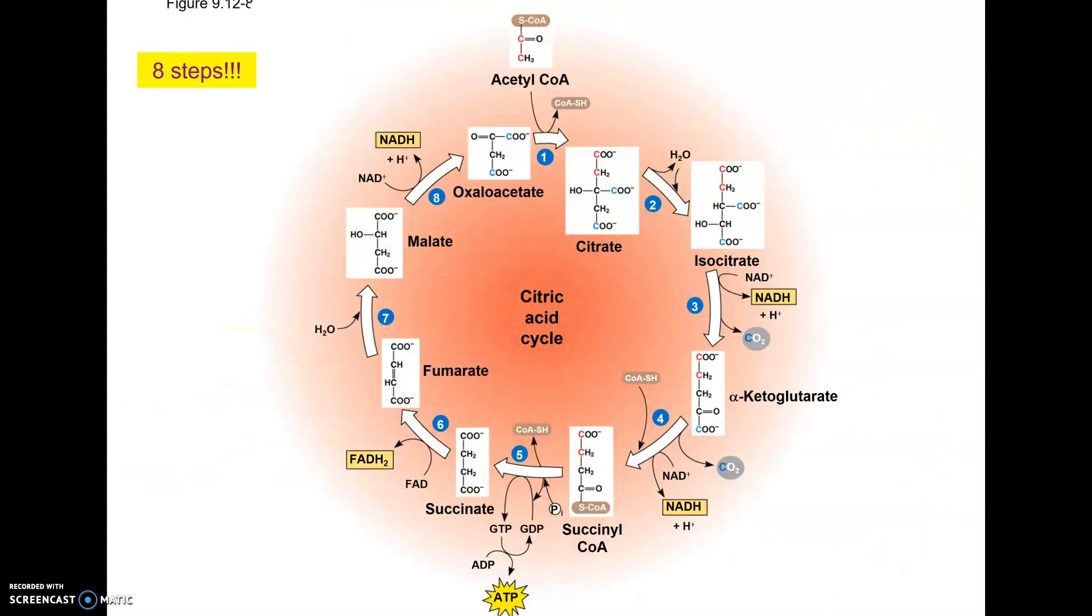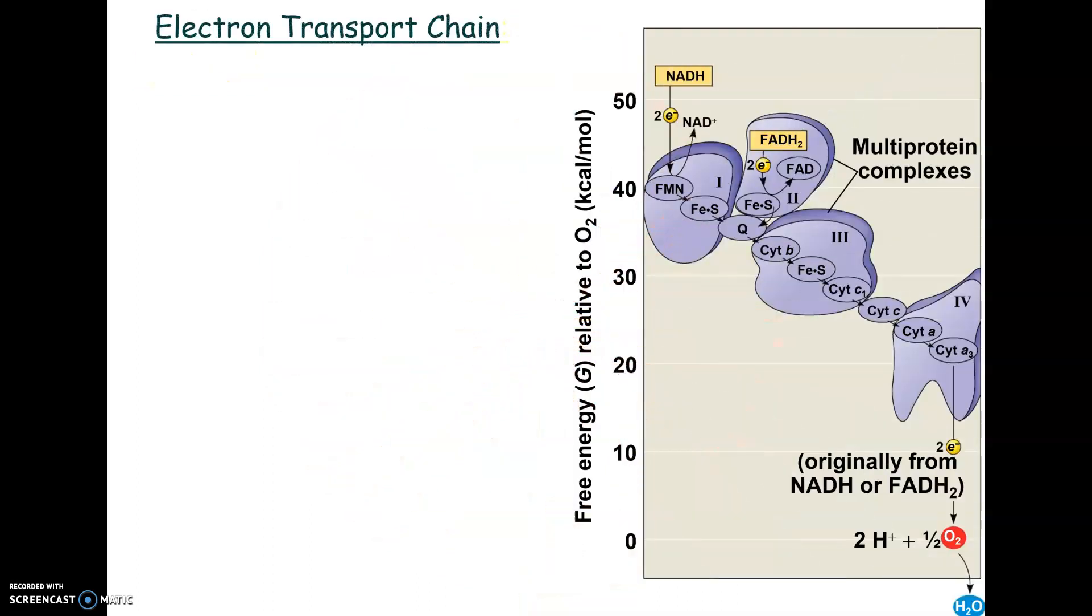So this is a picture of what the Krebs cycle really looks like. The reason it's sometimes called the citric acid cycle is because this very first thing that's made is citrate or citric acid, and so that's where the name comes from. You don't have to memorize all these steps and all these enzymes. You could be given a picture of this and ask questions about what's happening, as far as how many NADHs are being made or things like that.